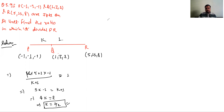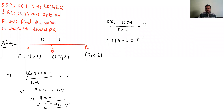Ek baar aur doosre coordinate ke liye bhi verify kar lete hain. (k×11 + 1×(-1)) / (k+1) = 3, to bana 11k - 1 = 3k + 3, 8k = 4, k = 1/2. Yeh hamara answer ho gaya.